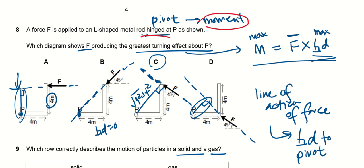They show F producing the greatest turning effect about P, that means they want us to find the diagram that has the greatest moment. Now, as you know, moment equals force times perpendicular distance. Since F is the same, then if I want maximum moment, greatest turning effect, that means my perpendicular distance must be maximum.